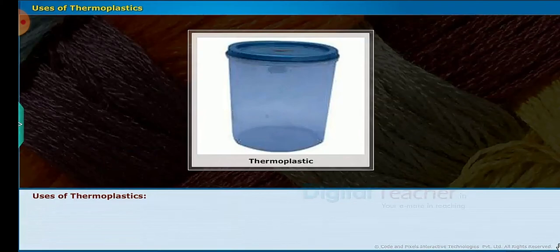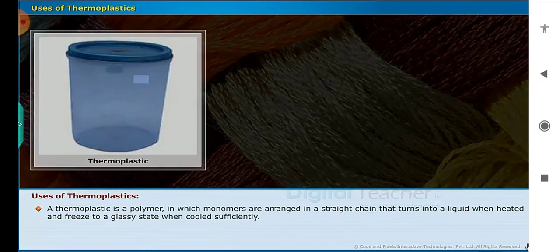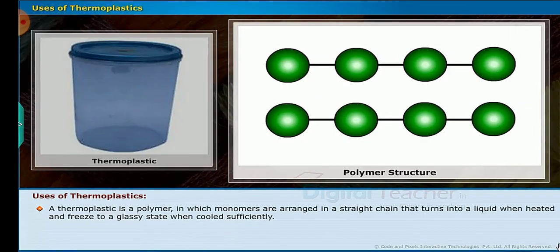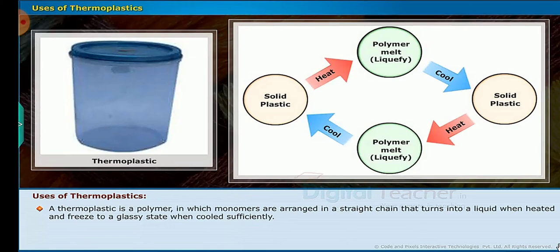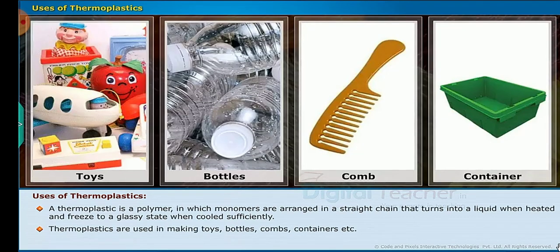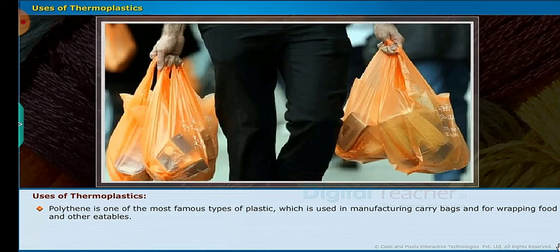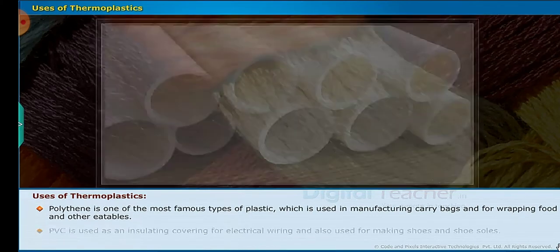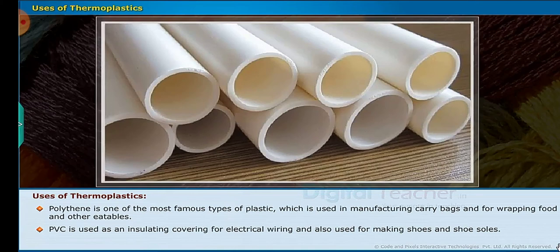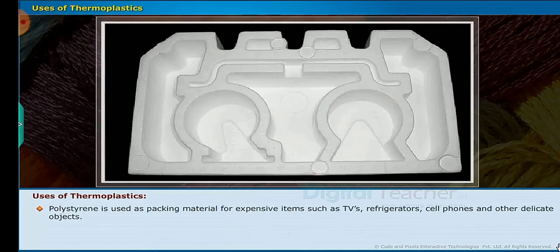Now we will study the uses of thermoplastics. A thermoplastic is a polymer in which monomers are arranged in a straight chain that turns into a liquid when heated and freezes to a glassy state when cooled sufficiently. Thermoplastics are used in making toys, bottles, combs and containers. Polythene is one of the most famous types of plastic, used in manufacturing carry bags and for wrapping food and other eatables. PVC is used as an insulating covering for electrical wiring and also for making shoes and shoe soles. Polystyrene is used as packing material for expensive items such as TVs, refrigerators, tablets, cell phones and other delicate objects.